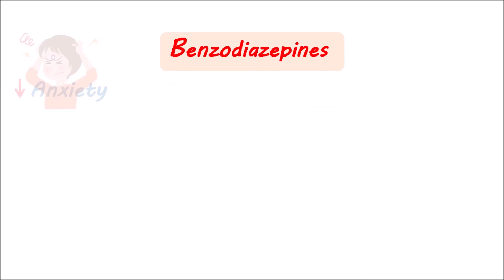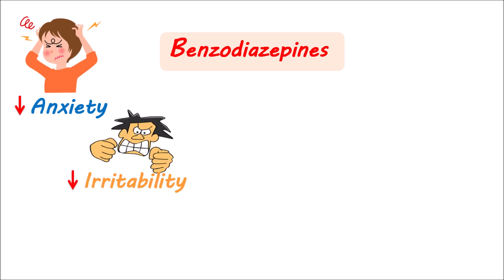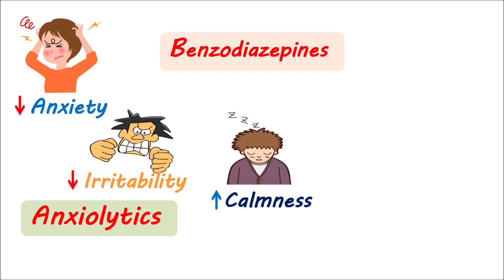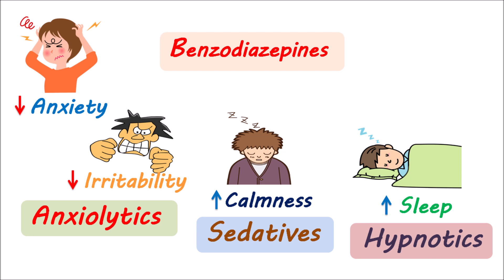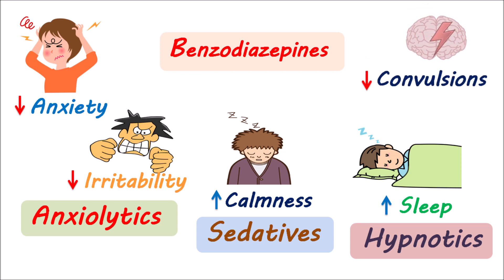These categories of drugs reduce anxiety and they also reduce irritability, which again reduces symptoms of anxiety. That's why these benzos are classified as anxiolytics. They also increase calmness in the patients, hence they are called sedatives, and they induce sleep, that's why they are called hypnotics. In addition, a few of these drugs can reduce neuronal excitability, thereby reducing the risk of convulsions. Hence, these drugs also act as anticonvulsants.